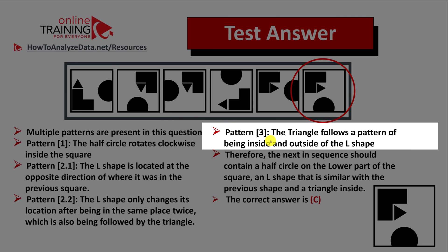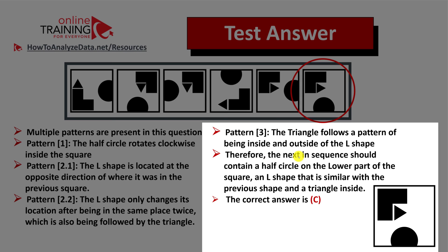And then last but not least is the pattern of the small triangle. The small triangle here follows the pattern of being inside and outside of the L shape. Therefore, this is why the next item in the sequence should contain a half circle in the lower part of the square and then the L shape, which is similar with the previous shape, and the triangle inside. So the correct answer is choice C.